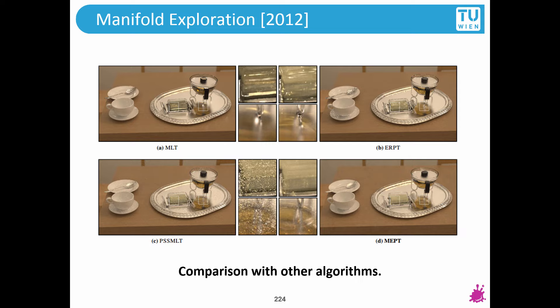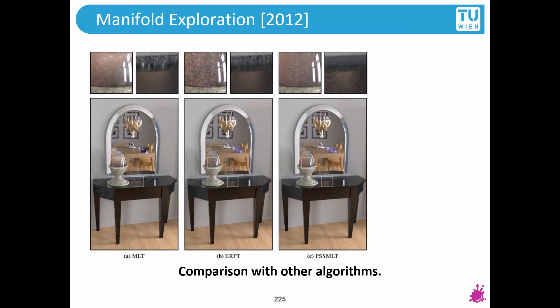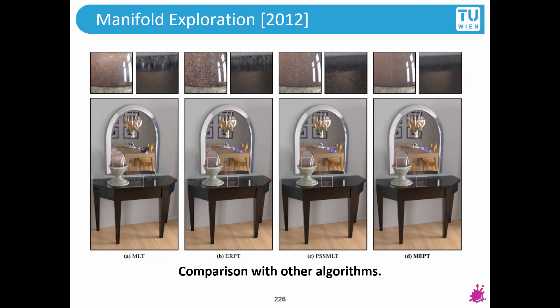PSS MLT is the Kelemen-style MLT. MLT is the original Veach Metropolis. One more example: A — Veach Metropolis, B — ERPT, C — Kelemen Metropolis Light Transport algorithm, and D — Manifold Exploration Path Tracing.